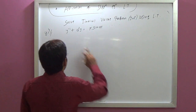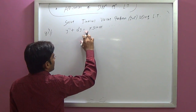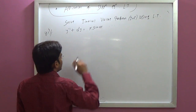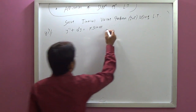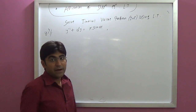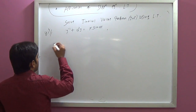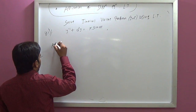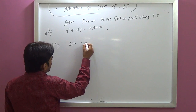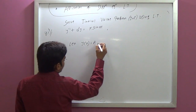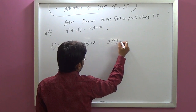Example 3: y double dash plus a-squared y equals k·sin(at). Here y(0) and y'(0) are 0. Let y(0) equal a and y'(0) equal b.